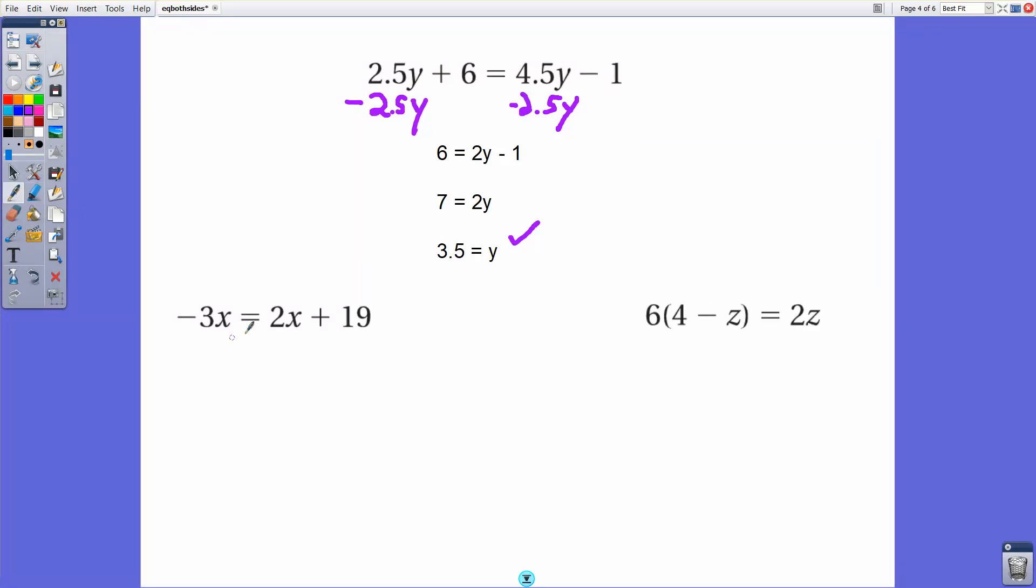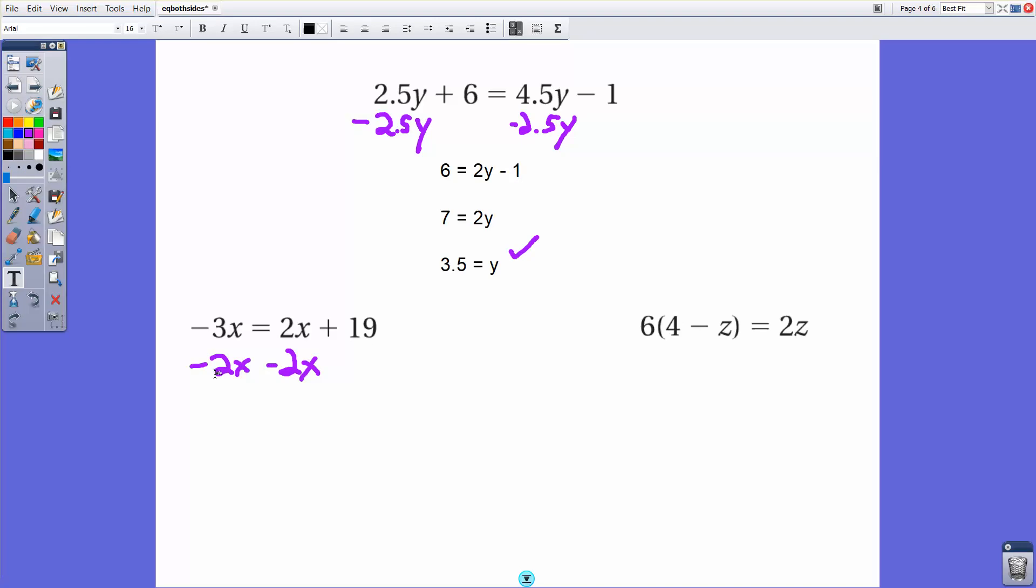With the second example here, this is a case where we're going to want to subtract 2x from both sides because we already have one side that just has an x. So we don't want to move that away and make it more difficult here. So in this case, we subtract 2x first from both sides. We'll have negative 5x equals 19, which means that when we divide both sides by negative 5, x will equal negative 19 divided by 5, or negative 3.8 if you prefer decimals.